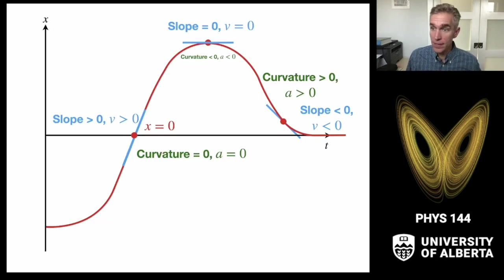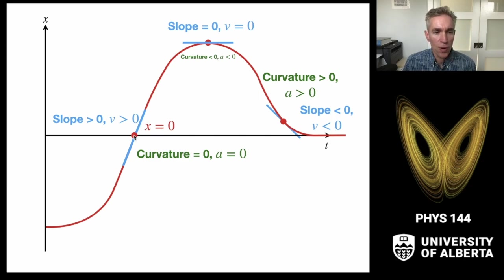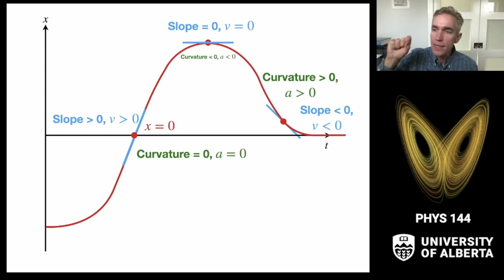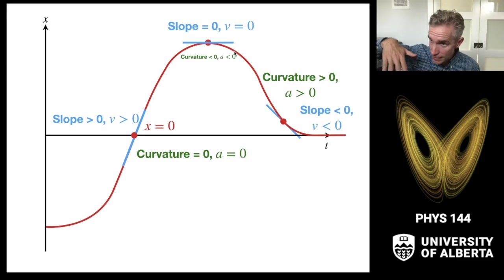Let's look at this graphically. Here's an x-vs-t curve for a particle moving through time. At the point where the curve crosses x=0, the curve is moving upward so the slope is positive — the velocity is positive. At the top, the slope of the curve is zero — the position is coming to a stop and turning around, so velocity is zero at that tangent point. As the particle turns around and the slope becomes negative, the particle moves back in the negative x direction.